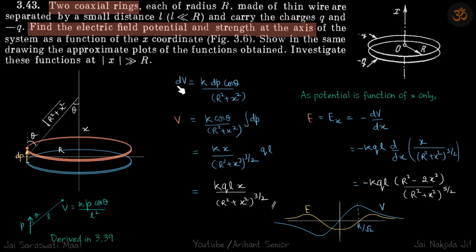So small potential dV at this point will be, using this formula, K dP cos theta by square of this distance, so R square plus x square.